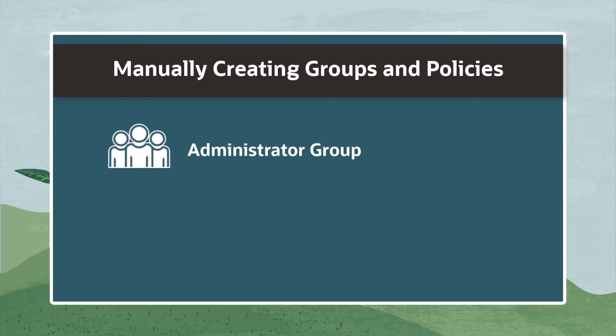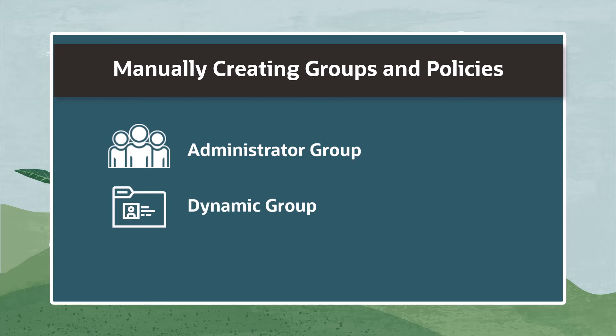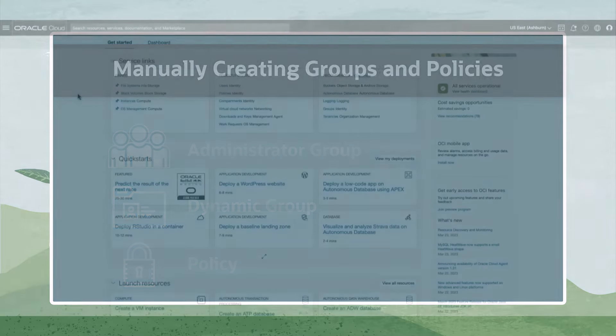To set up IAM policies for OS Management Hub, we must first identify Administrators as an Administrator group. Then we will create a dynamic group that includes the instance resources that OS Management Hub will manage, and then we will create policy statements that allow the Administrator group to manage and operate the service and allows the dynamic group of resources to register with OS Management Hub. Let's begin with navigating to the Groups page to create our Administrator group.